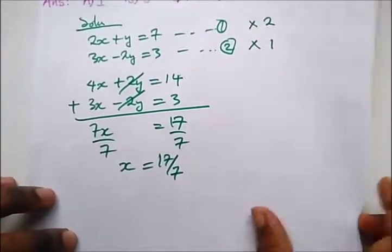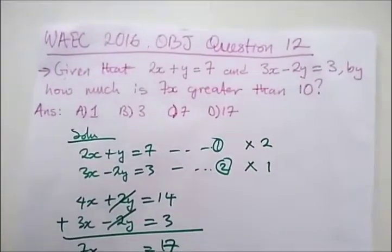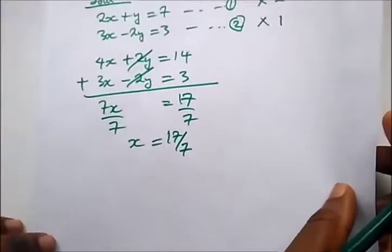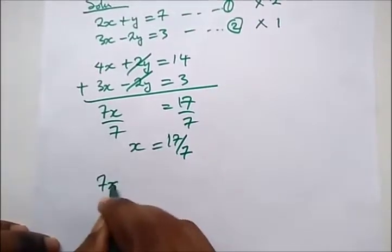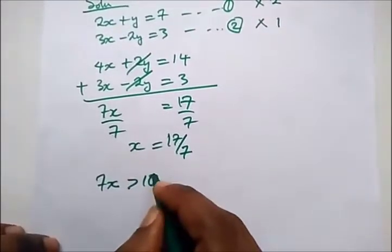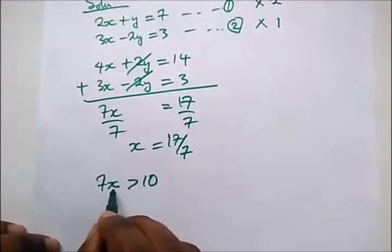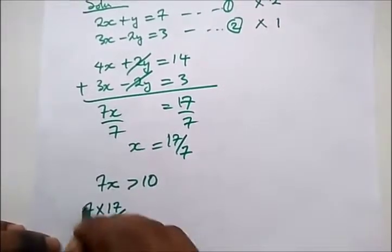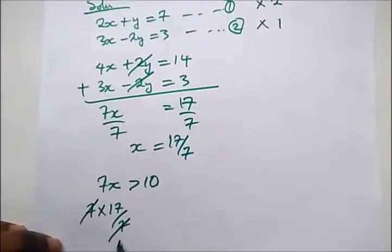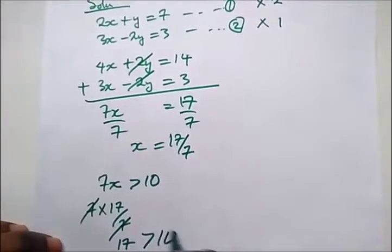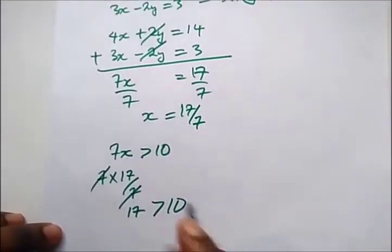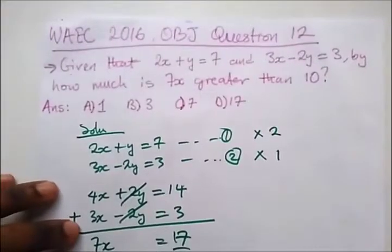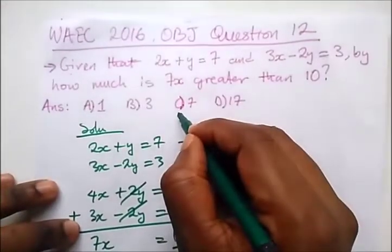The question says by how much is 7x greater than 10? So we are trying to get 7x greater than 10. By how much? We already know that x is 17 over 7, so let's put this in: 7 times 17 over 7. This will cancel, so we are left with 17 greater than 10. So by how much is it greater? That's 17 minus 10 which is 7. And what's our correct option in the answer? That's option C.